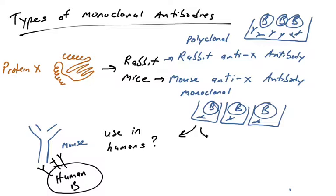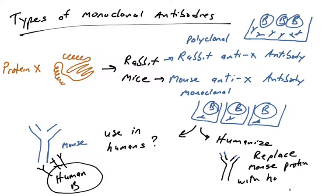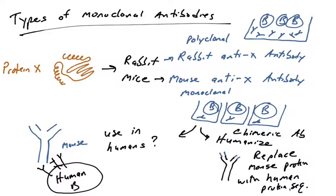Scientists have figured out how to replace some of the mouse constant regions with human constant regions — humanizing the mouse antibody. So if you want to target protein X, you inject protein X into a mouse, make monoclonal antibodies, then genetically engineer the cells so that the constant region of the antibody is human and only the variable region is mouse. Most of this antibody complex is now human protein, not mouse protein. This is called a humanized antibody or chimeric antibody, where the majority of the sequence is human — and humans should not make antibodies against human sequences. Many antibody-based drugs are humanized or chimeric antibodies, with the variable region from mouse, rabbit, or rat and the constant region from humans.